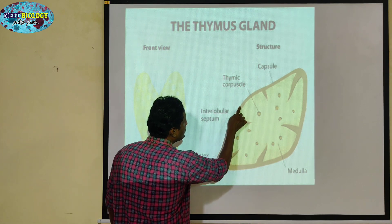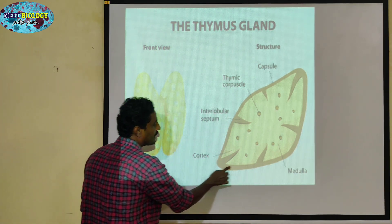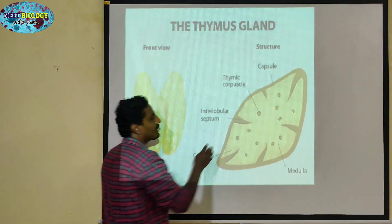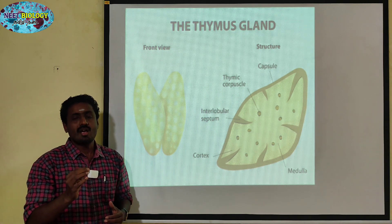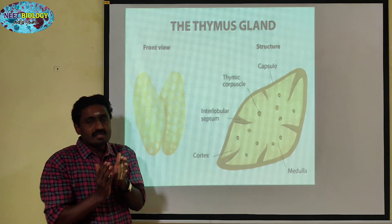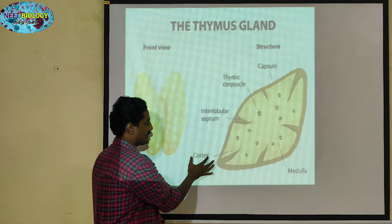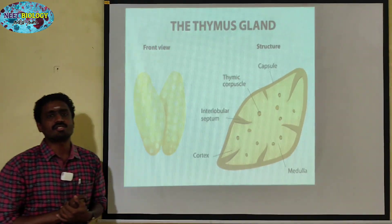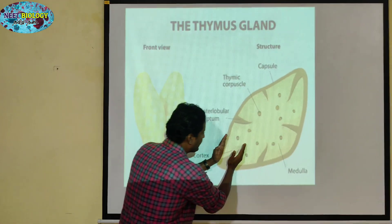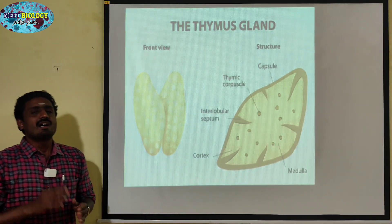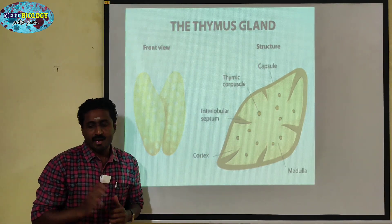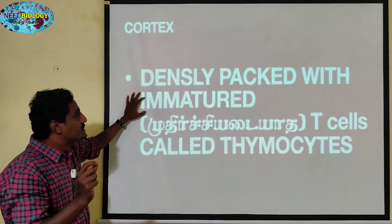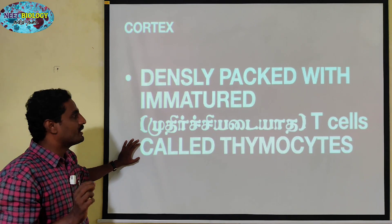The outermost layer is called the capsule. The second layer, which is next to the capsule, is called the cortex.